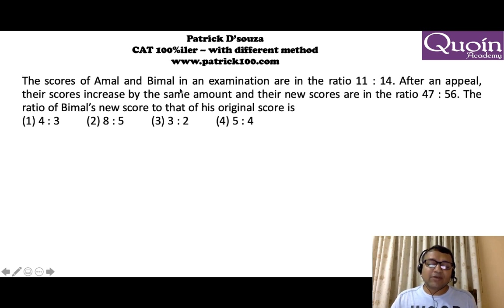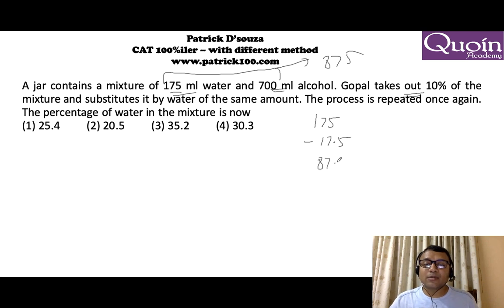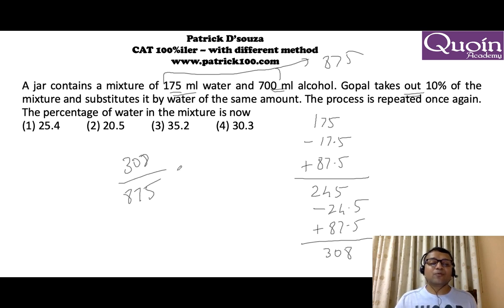The jar contains a mixture of 175 ml water and 700 ml alcohol. We are removing 10% every time. Initially there was 175 ml of water. You remove 10%, that means you're removing 17.5. When water also goes 10%, both 10% of water and 10% of alcohol are gone. Then you substitute back with water, the total is 875. You're putting 10% water, 87.5, replacing back. Total left is 245. Again you remove 10% of water and add 87.5. You're adding 63 which comes to 308. So now we have 308 liters of water out of 875.